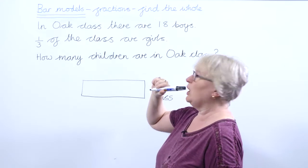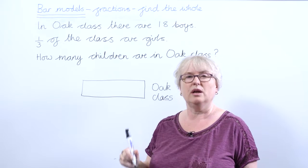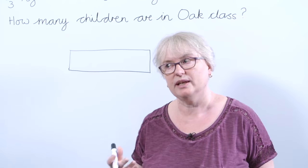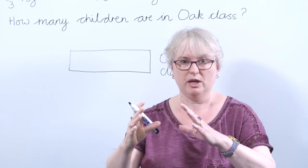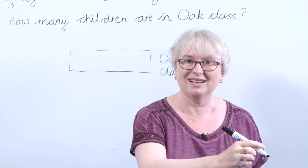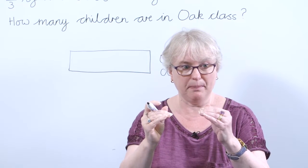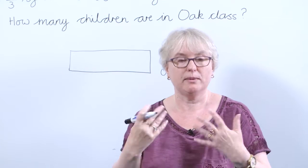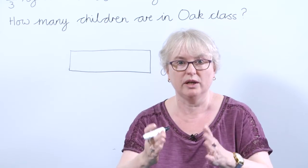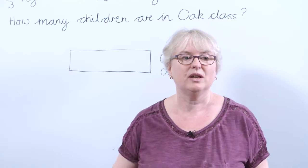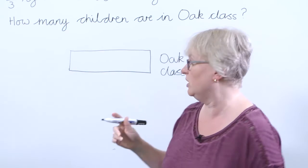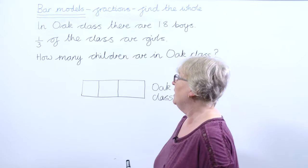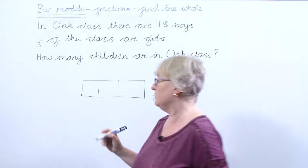There are 18 boys. One third of the class are girls, so I'm going to put a third of the class onto my bar model. An important teaching point: children often think they need to draw three lines to divide something into thirds. Always remind them that when dividing a bar model you draw one line fewer than the number of parts. So for thirds, draw two lines; for eighths, draw seven lines. In this case I'm going to draw two lines, making them roughly equal to represent thirds. I know one third of the bar is girls, so I'll label that section 'girls.'